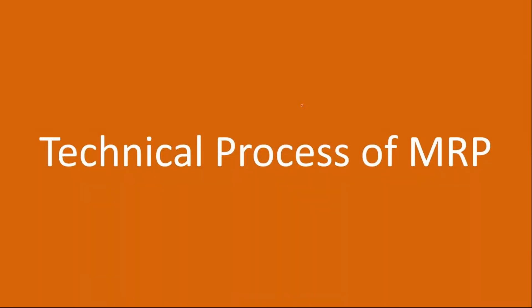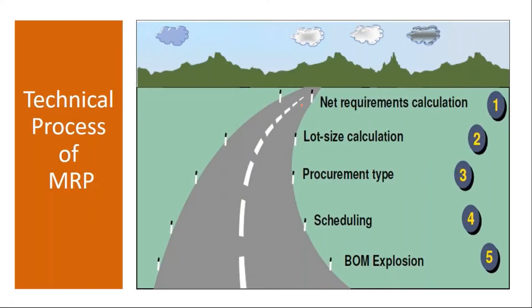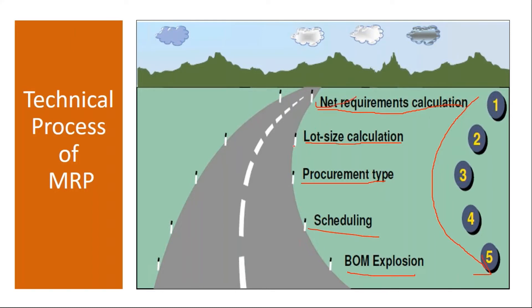Now we will understand the technical process of MRP. When you run MRP, the system in the background performs these activities sequentially: first, net requirement calculation; then lot size calculation; then procurement type determination; then scheduling; and finally BOM explosion. It carries out these activities in sequential manner, one after the other. We will understand all these things in detail.